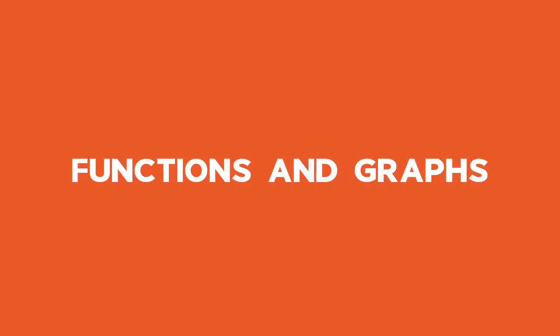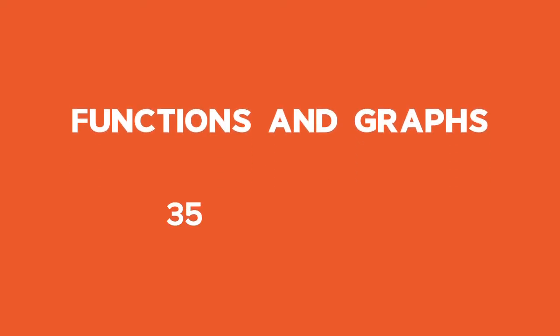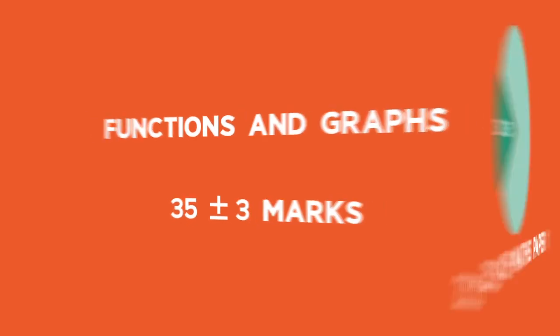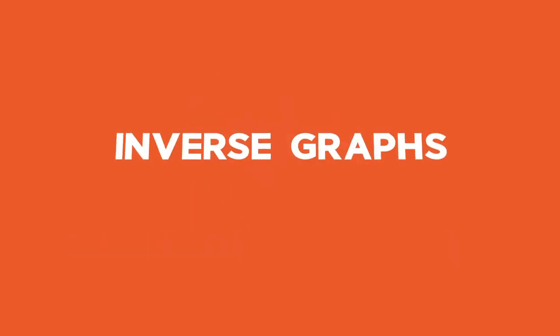Functions and graphs are roughly 35 marks (plus or minus 3) in the final exam, which is 23 to 25% of Maths Paper 1.